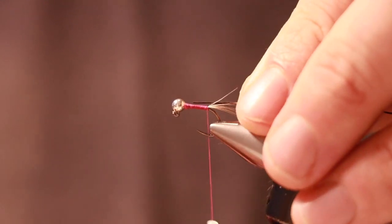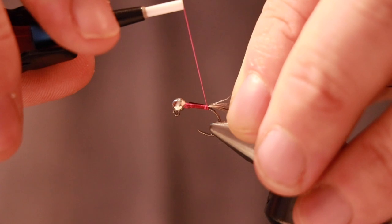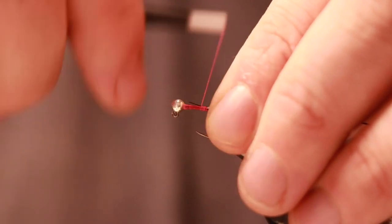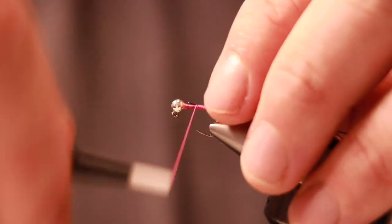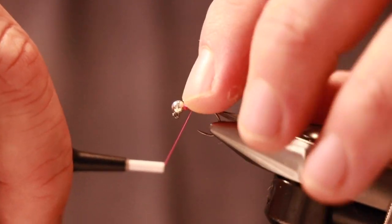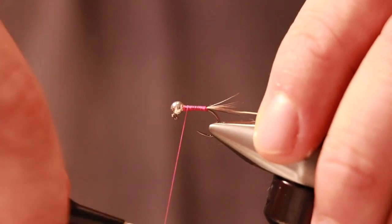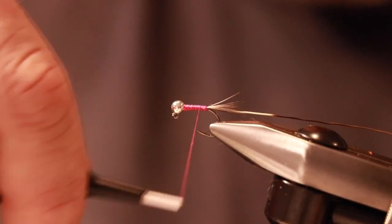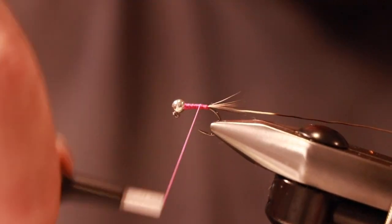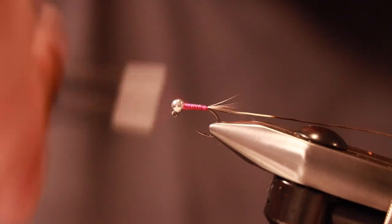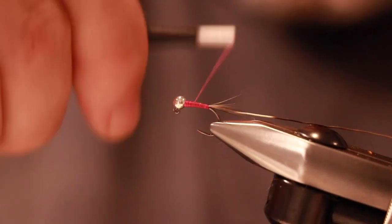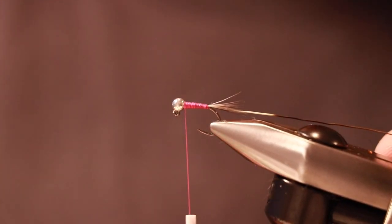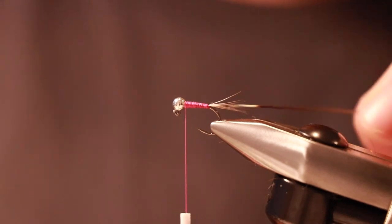So I'm just going to lay that against the hook. Full length of the body again. I'm going to just bring my thread up in touching turns. Try and keep that stem on top or on the side, wherever you've placed it. I'm going to go back down two-thirds of the way. Come back up. Back down halfway. Back up. That should be enough. You see it's starting to get a nice carrot shape.